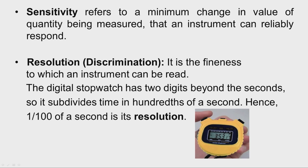The second term is sensitivity of an instrument. This refers to the minimum change in the value of a quantity being measured that an instrument can respond to. For example, with a dial indicator, if we apply a displacement of 0.1 millimeter and the dial indicator responds, then the sensitivity of the dial indicator is 0.1 millimeter.